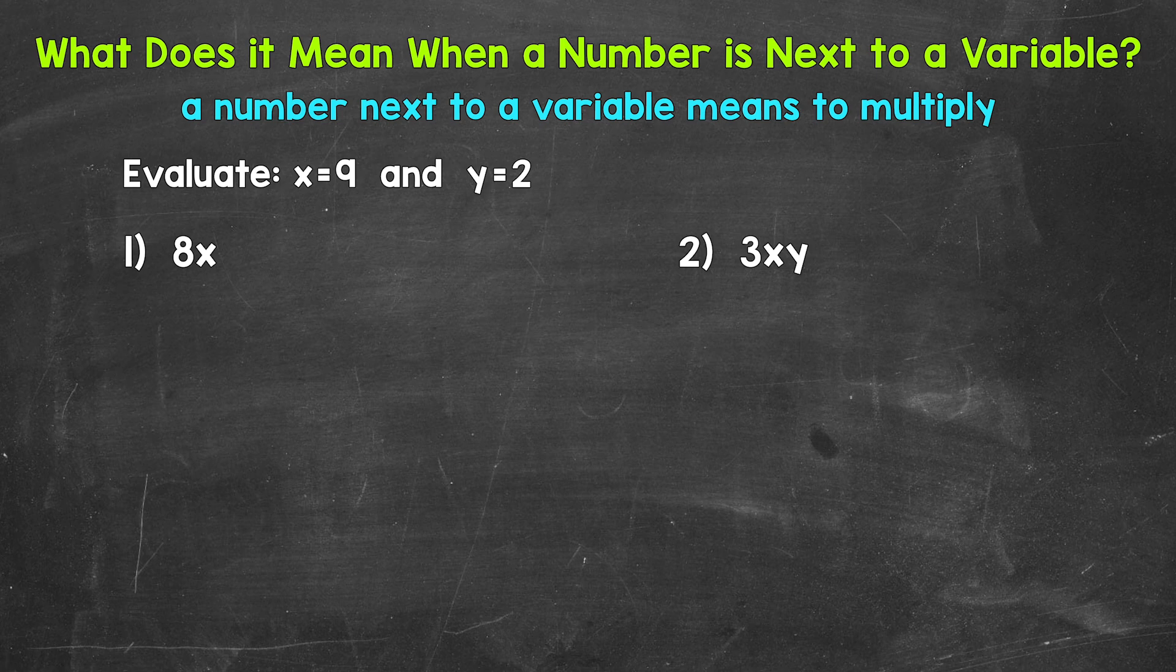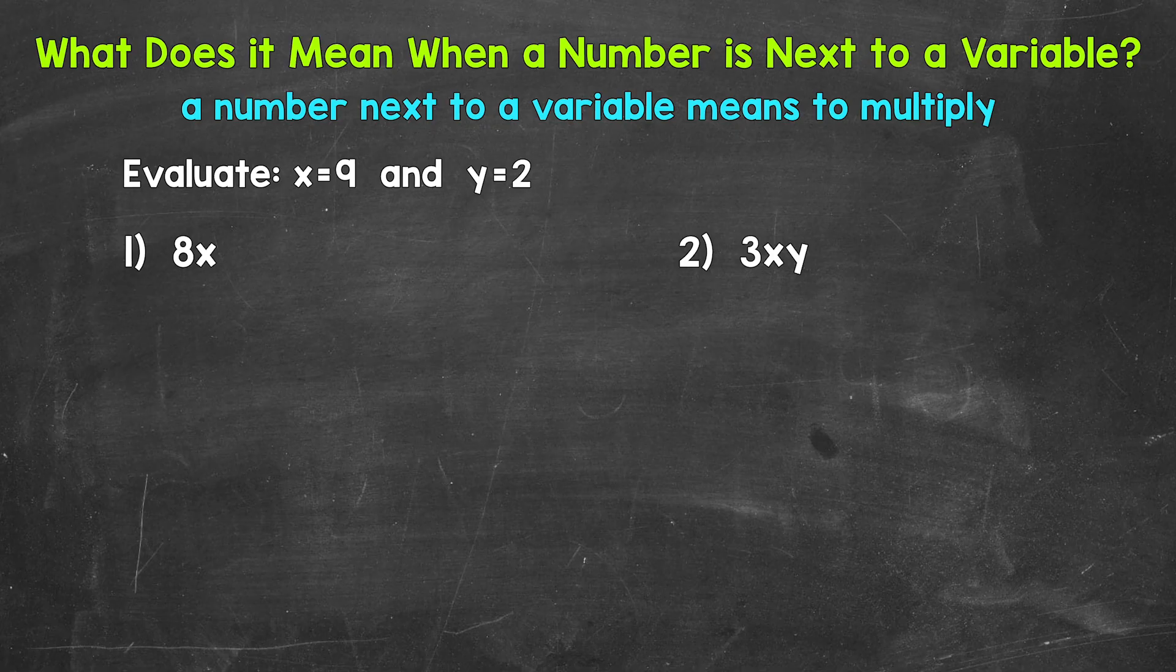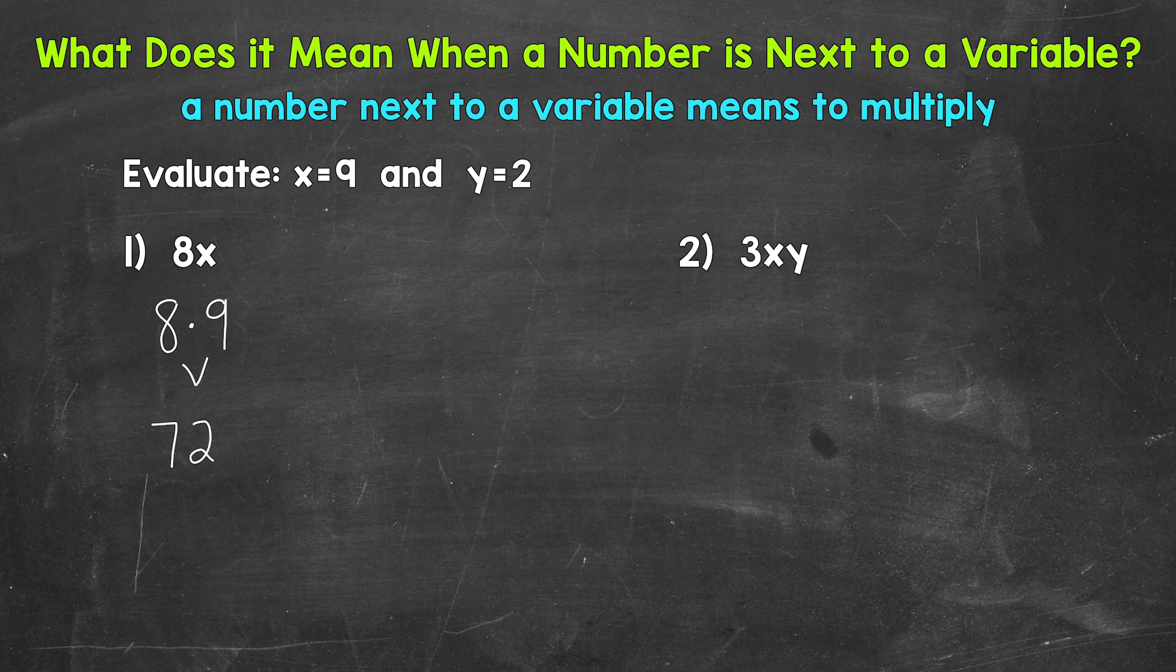So let's plug in 9 for x and rewrite this expression. We have 8 times x. Well x equals 9, so let's plug in 9 for x. Then multiply. 8 times 9 equals 72. The value of this expression is 72 when x equals 9.